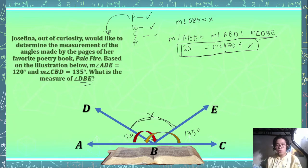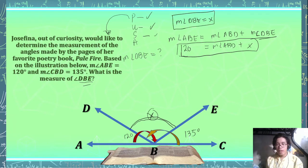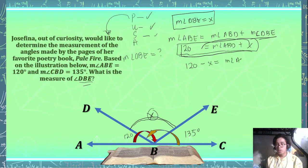Now, how are we going to solve for the measurement of angle ABD? Since we want to get the measurement of angle DBE — that's X — from our formula 120 equals the measurement of angle ABD plus X, we can transfer X to the other side. So the measurement of angle ABD equals 120 minus X.